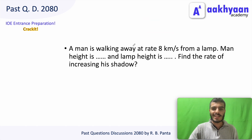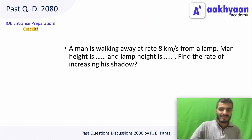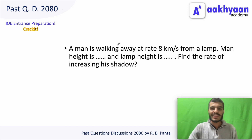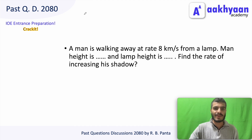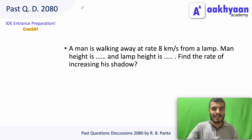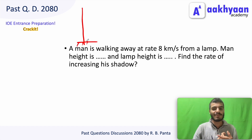A man is walking away from a lamp post at a rate of 8 km per second. We need to find the rate of increase of his shadow. The lamp is at a fixed position and the man's distance from the lamp is increasing at a constant rate.